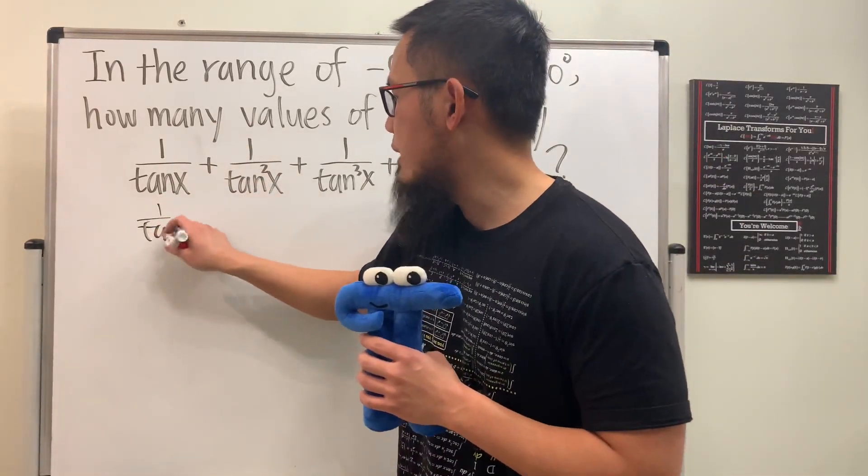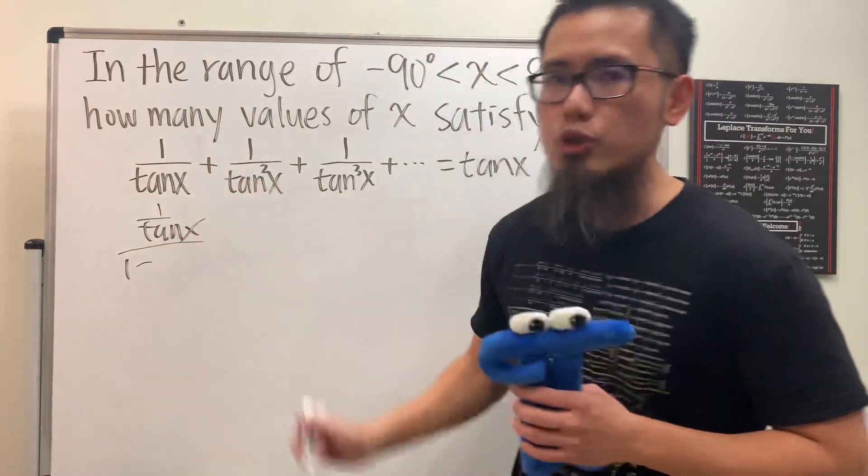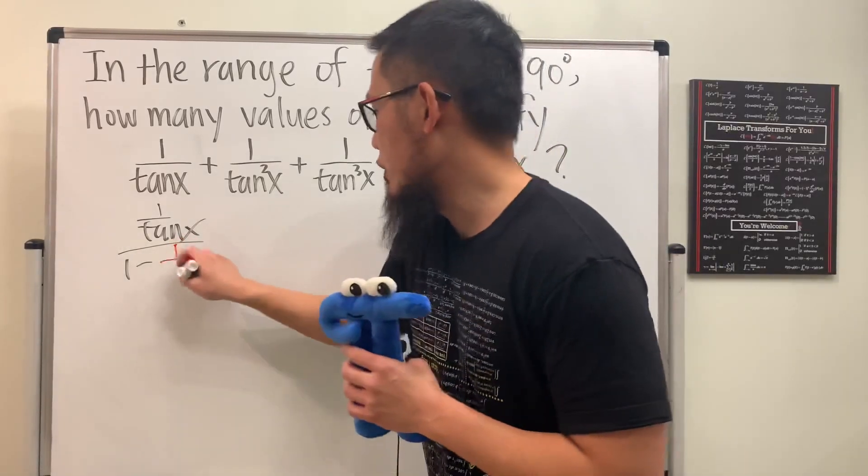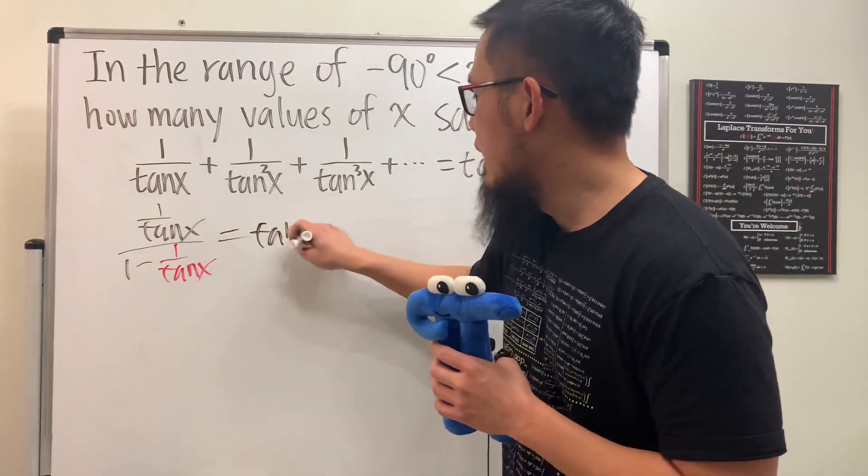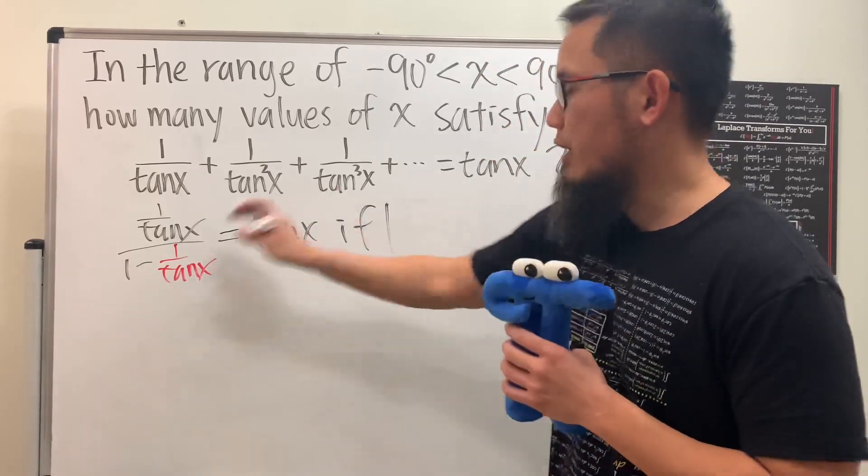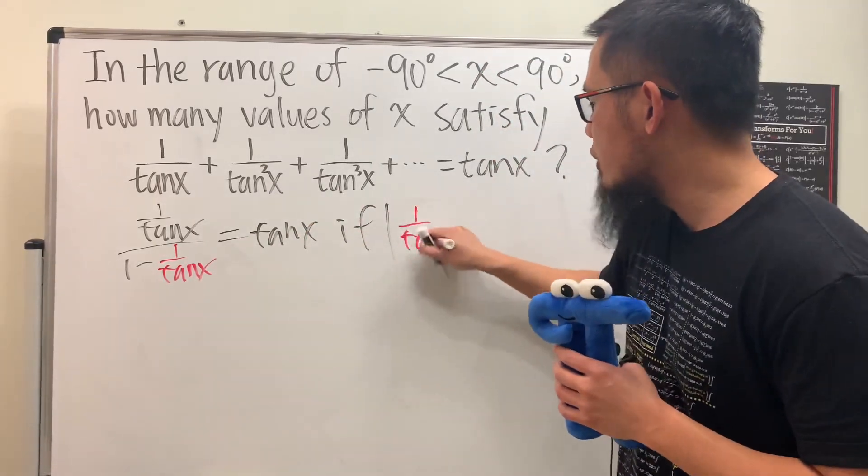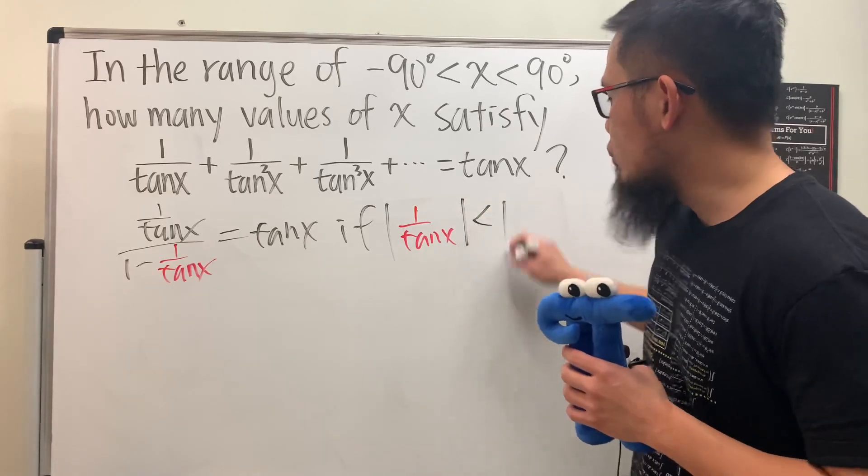So we can put on the first term, which is 1 over tangent x, divided by 1 minus the common ratio, which is also 1 over tangent x. And this right here, we can make this equal to tangent x, under the condition that the absolute value of the common ratio, which is 1 over tangent x, is less than 1.